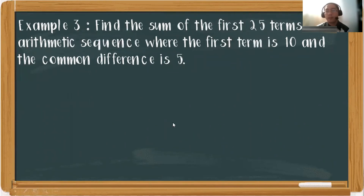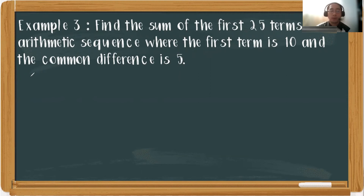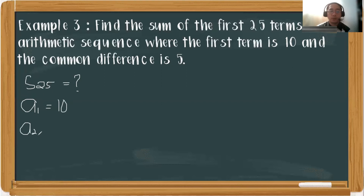This type of problem would possibly exist in solving arithmetic series. Here we need the sum of the first 25 terms of an arithmetic sequence where the first term is 10 and the common difference is 5. Again, we will be solving for a sub 25. We already have the given a sub 1, which is 10, but we don't have a sub 25.